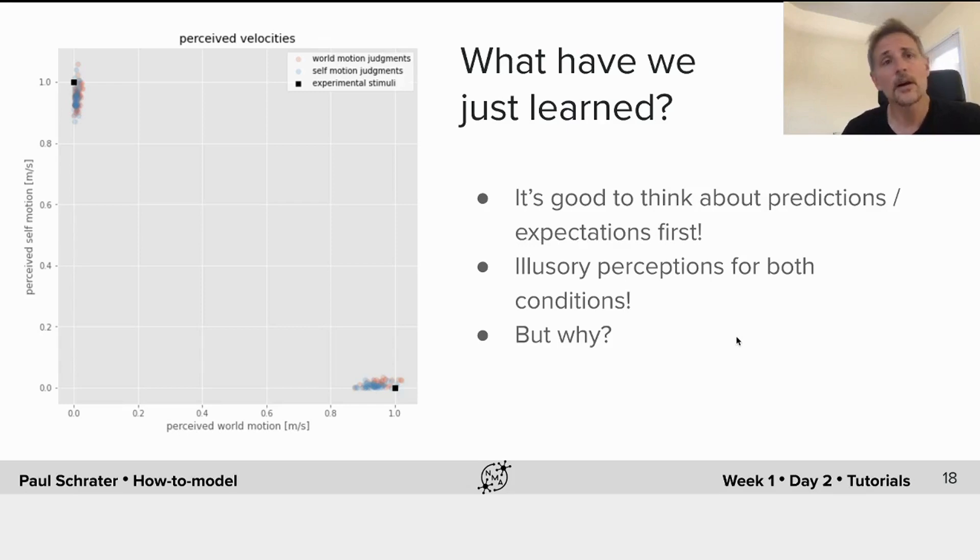However, our participant data shows that the illusion occurs in both cases: when you are stationary and the world is moving, having an illusory self motion, but also having an illusory motion of stationarity when you are actually moving, but the world is stationary. So why would these illusions occur?